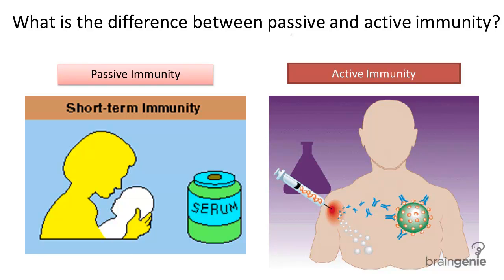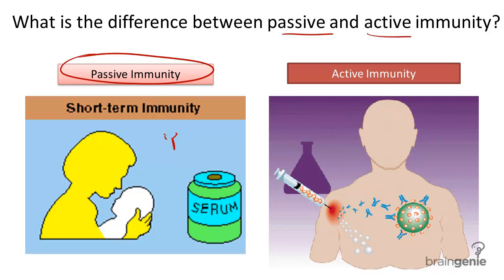What's the difference between passive and active immunity? Passive immunity is an example of the body using an army of antibodies against a pathogen that it has never been exposed to before.